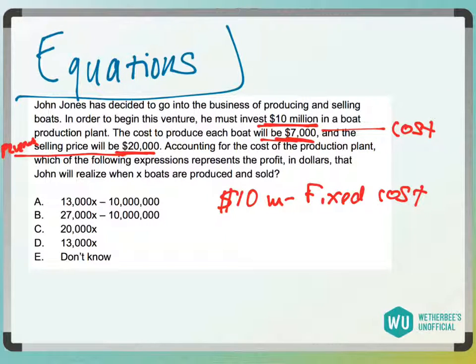Okay, so we want to know the profit in dollars that John will realize. So the profit is going to be the difference between the cost and the revenue of selling something.